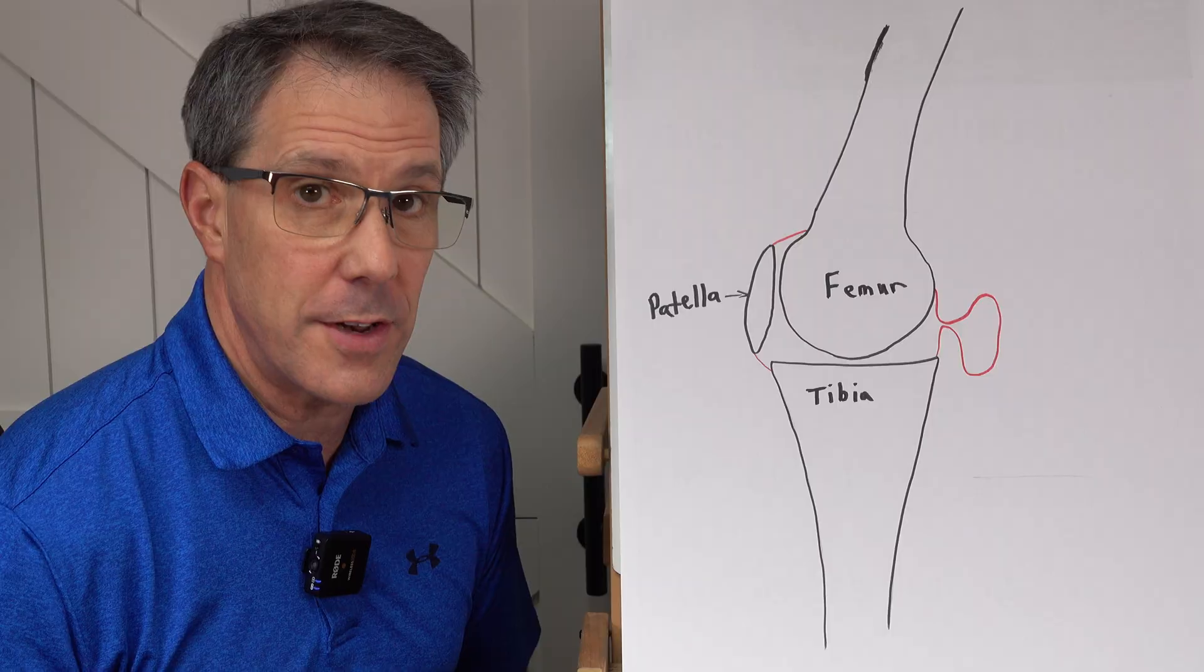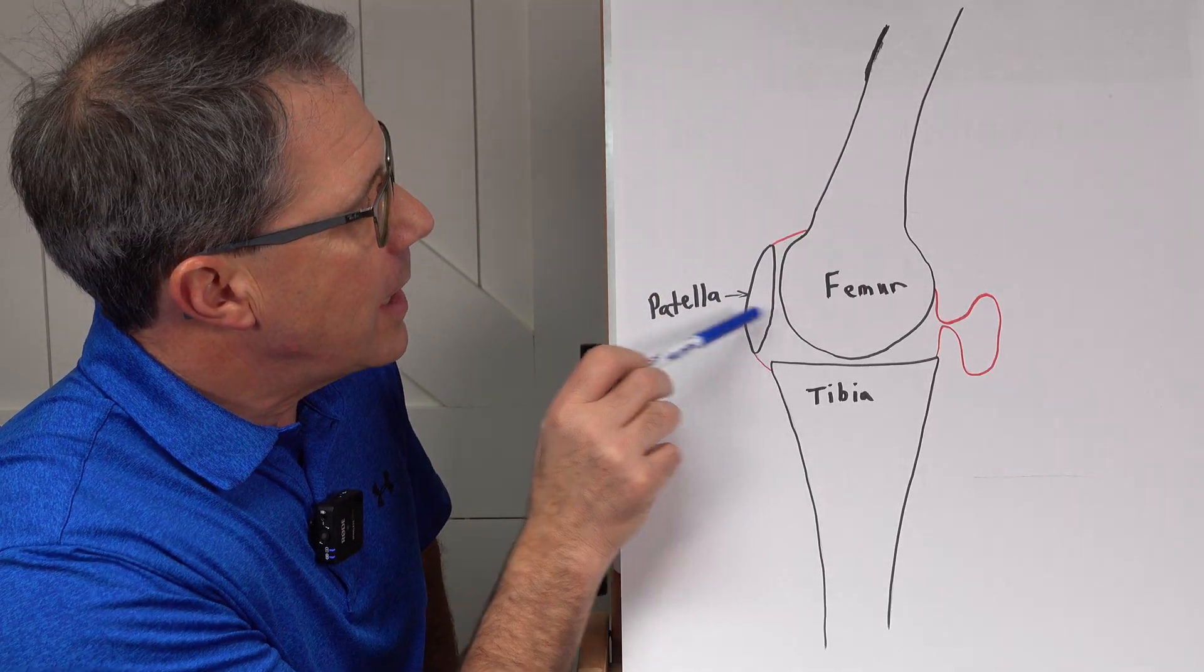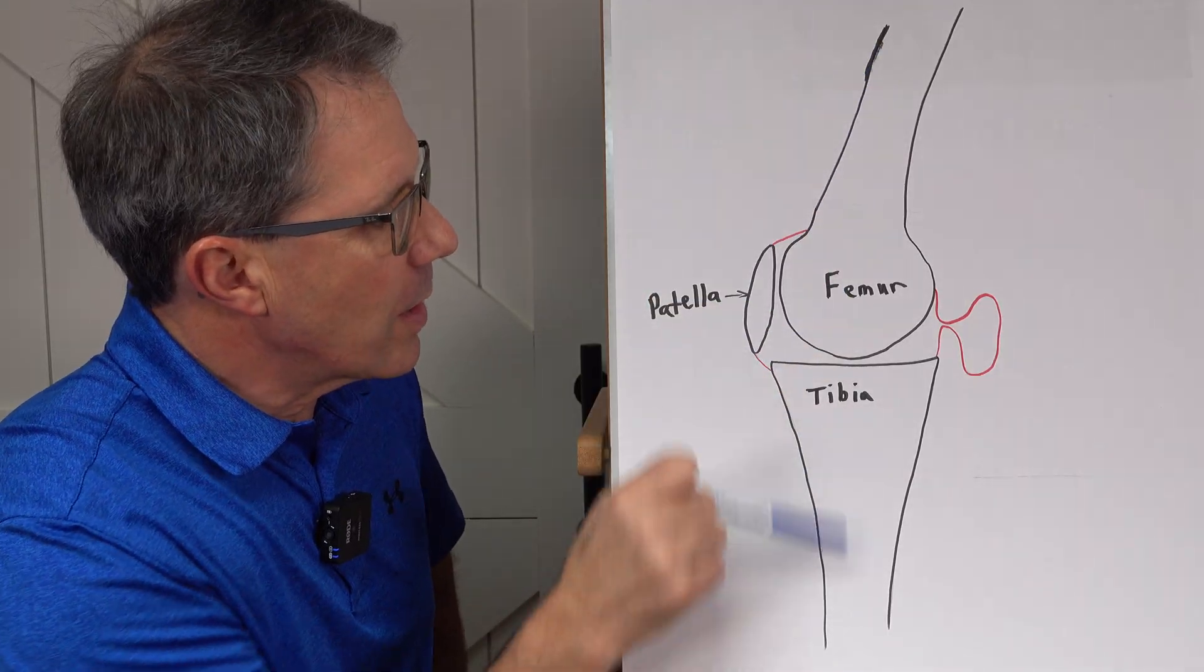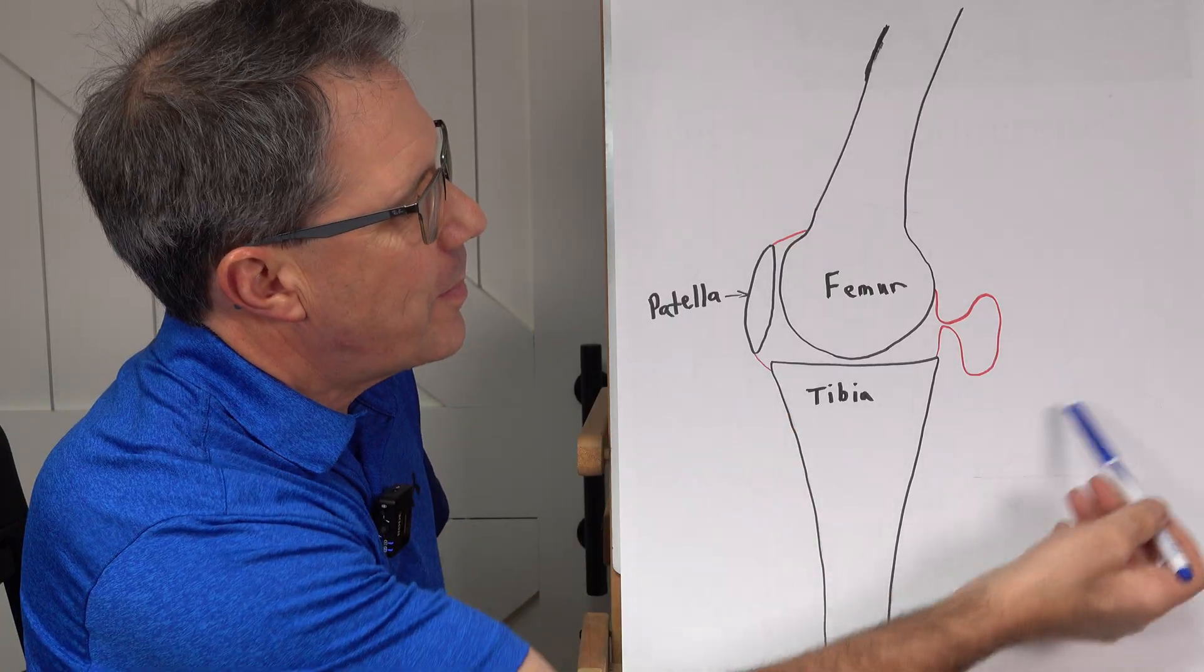So let's just get oriented first. This is the front of the knee right here. This is where the kneecap is. Here's this big femur, which is your thigh bone, tibia, which is the lower leg bone. And so this is the front of the knee. This is the back of the knee.